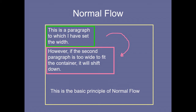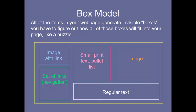One more thing: this is called the box model. Normal flow and other things come under the box model. All items in your web page generate invisible boxes, and you have to figure out how all those boxes fit into your page like a puzzle. For example: one image with a link is one box, navigation links are one box, a bullet list is one box, and regular text is one box.